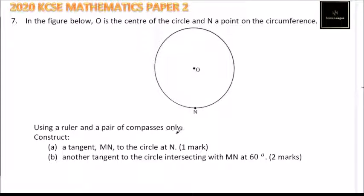Using a ruler and a pair of compass only, construct a tangent MN to the circle at N. So we make a tangent here. Another tangent to the circle intersecting with MN at 60 degrees.